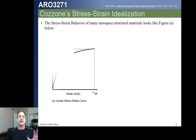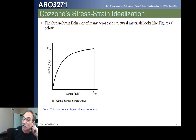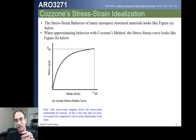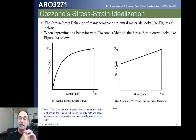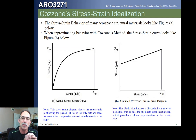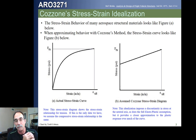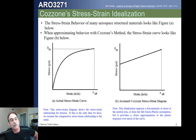Remember we looked last time at what a typical stress-strain curve looks like in the first quadrant. This particular one doesn't have a defined yield point, so we see the stress-strain relationship. We also looked at how the elastoplastic stress-strain curve looked as an idealization. Now what we're going to do is look at the Cozzone stress-strain curve. What Cozzone does is assume a fictitious trapezoidal distribution of stress to approximate the real stress-strain behavior.